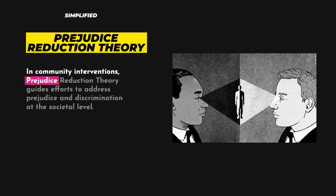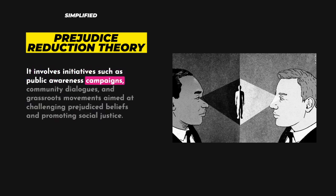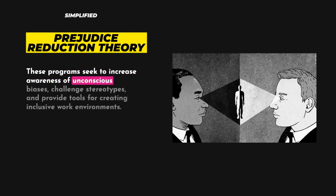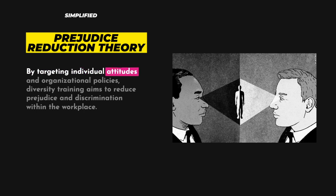In community interventions, Prejudice Reduction Theory guides efforts to address prejudice and discrimination at the societal level. It involves initiatives such as public awareness campaigns, community dialogues, and grassroots movements aimed at challenging prejudiced beliefs and promoting social justice. Furthermore, the theory informs the design and implementation of diversity training programs in organizations, which seek to increase awareness of unconscious biases, challenge stereotypes, and provide tools for creating inclusive work environments. By targeting individual attitudes and organizational policies, diversity training aims to reduce prejudice and discrimination within the workplace.